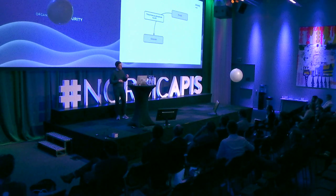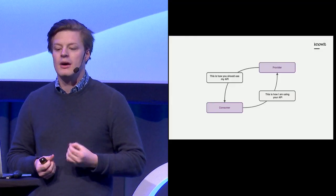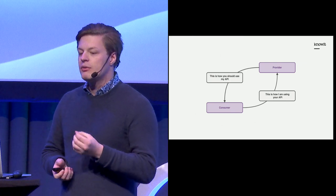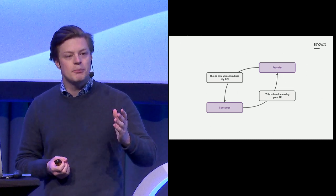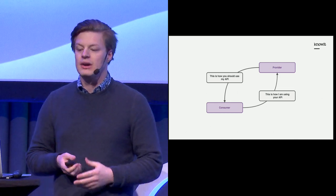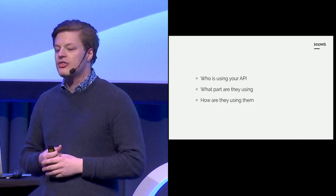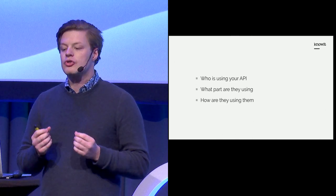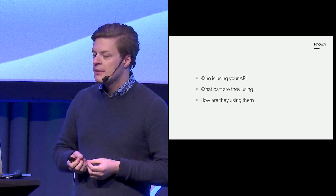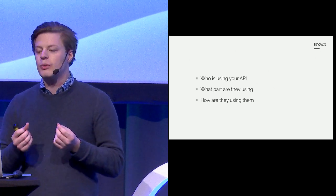When a consumer writes consumer contracts, they are essentially telling the provider: this is how I am using your API. So the provider will now have access to information about which consumers are using their application, which endpoints or parts of the API they're using, and how they are using it. This is essential information to reduce the number of API versions and to ensure stable services to the consumer — and with consumer-driven contracts, all of these questions will be answered.